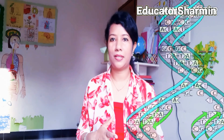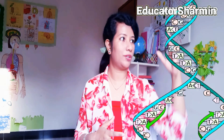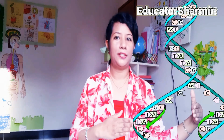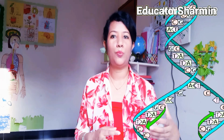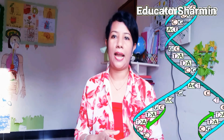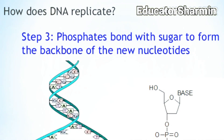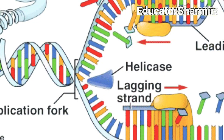DNA replication happens during cell division. The first step is the DNA double helix unzips and unwinds as the hydrogen bonds between the bases break. The enzyme that helps to unzip is helicase — helicase enzyme breaks the hydrogen bonds.